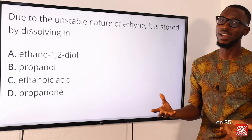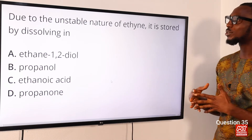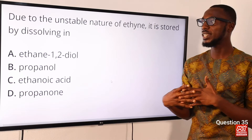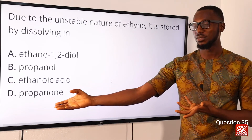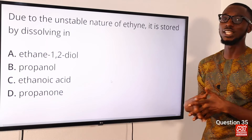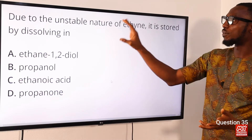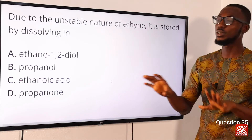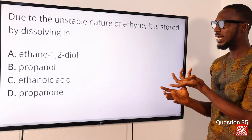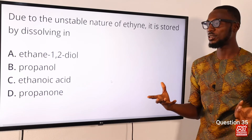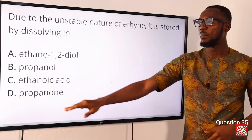Question 35: Due to the unstable nature of ethyne, it is stored by dissolving in propanone — also presented as acetone. It requires a special kind of cylinder under certain conditions. The correct option is option D for propanone.